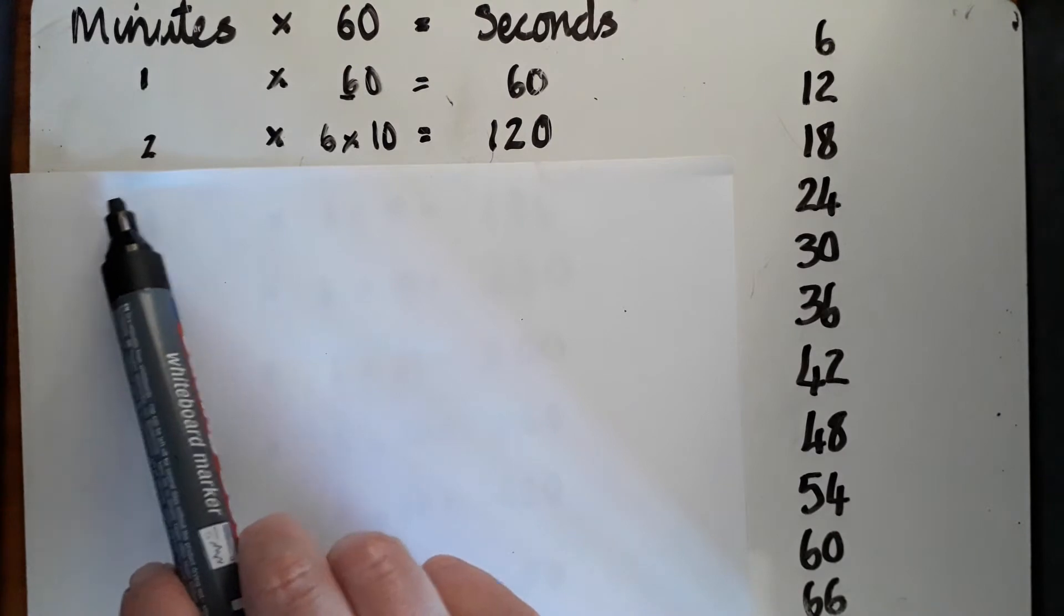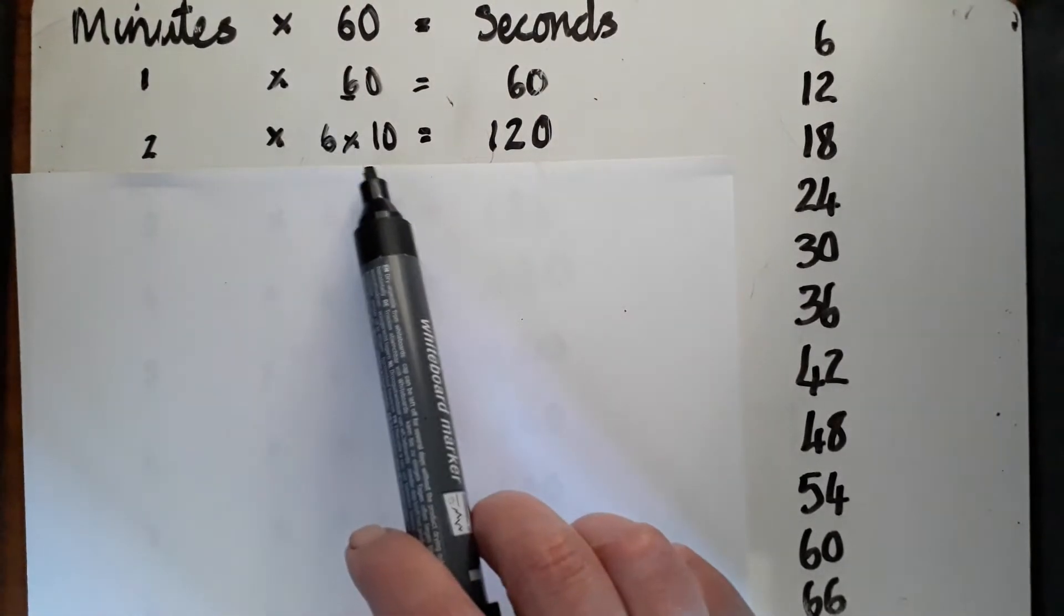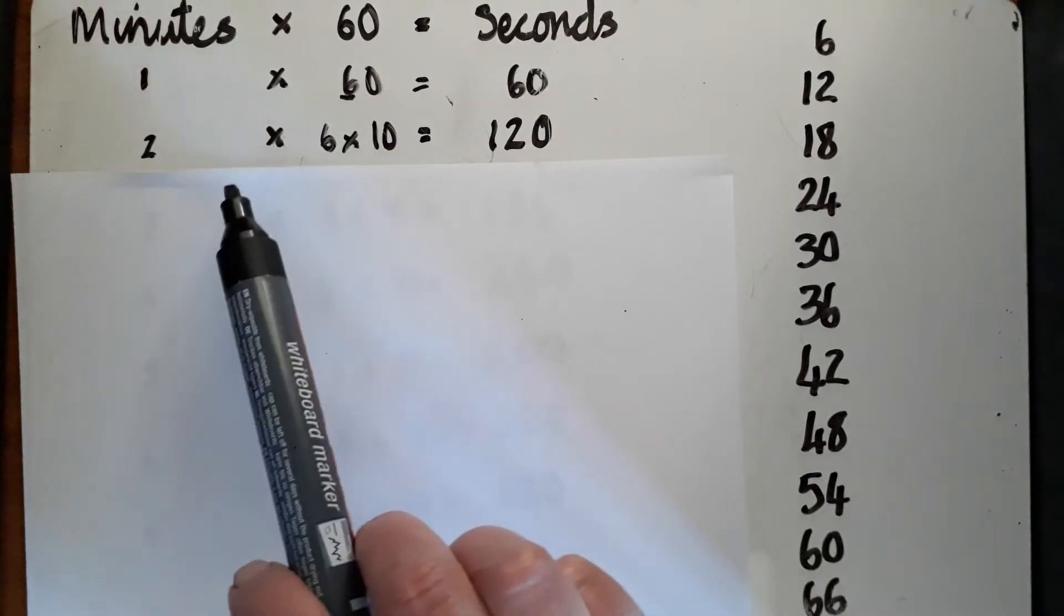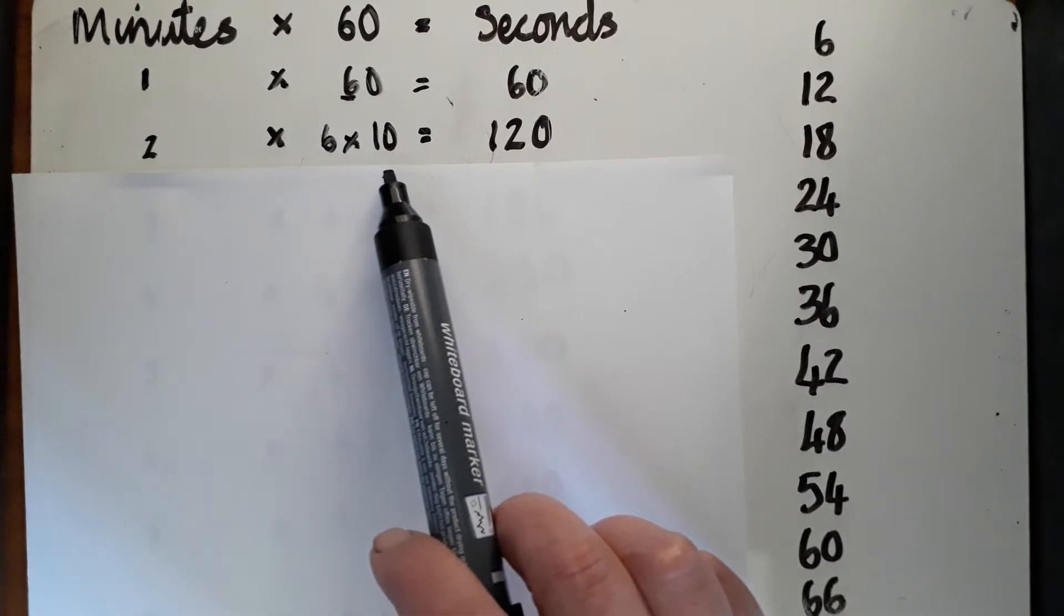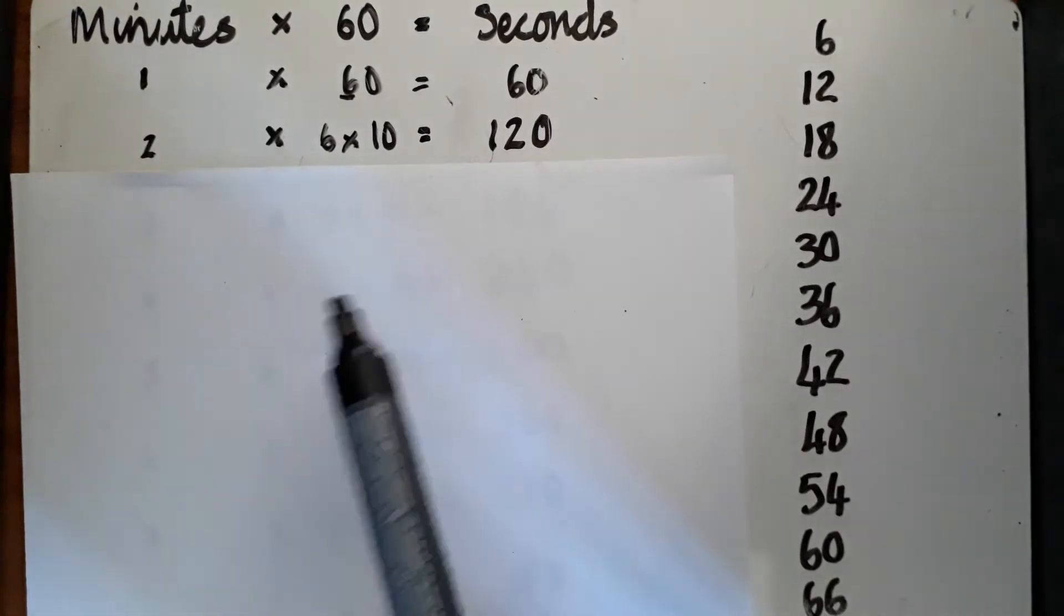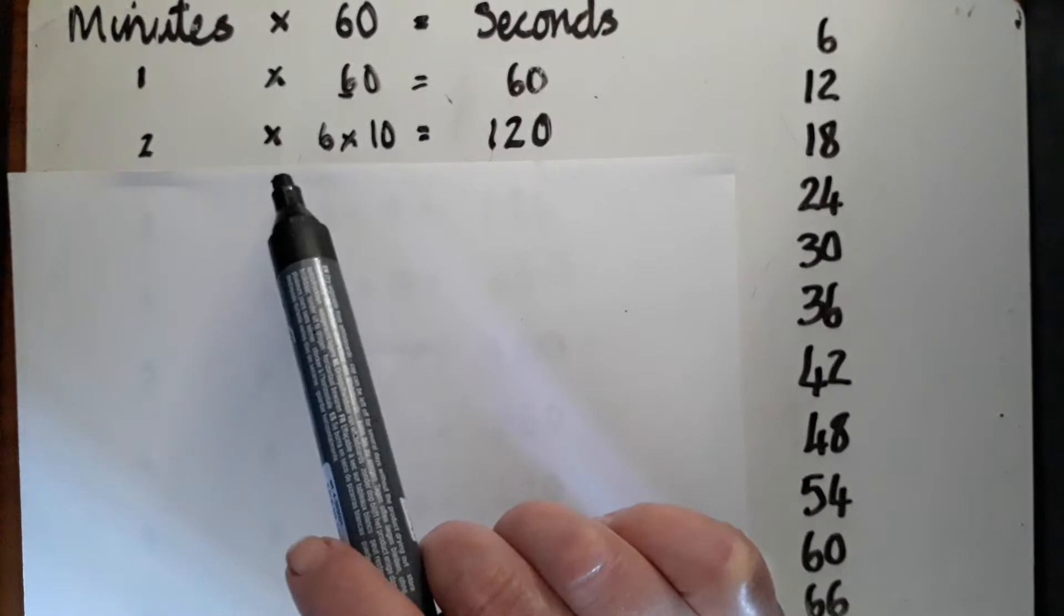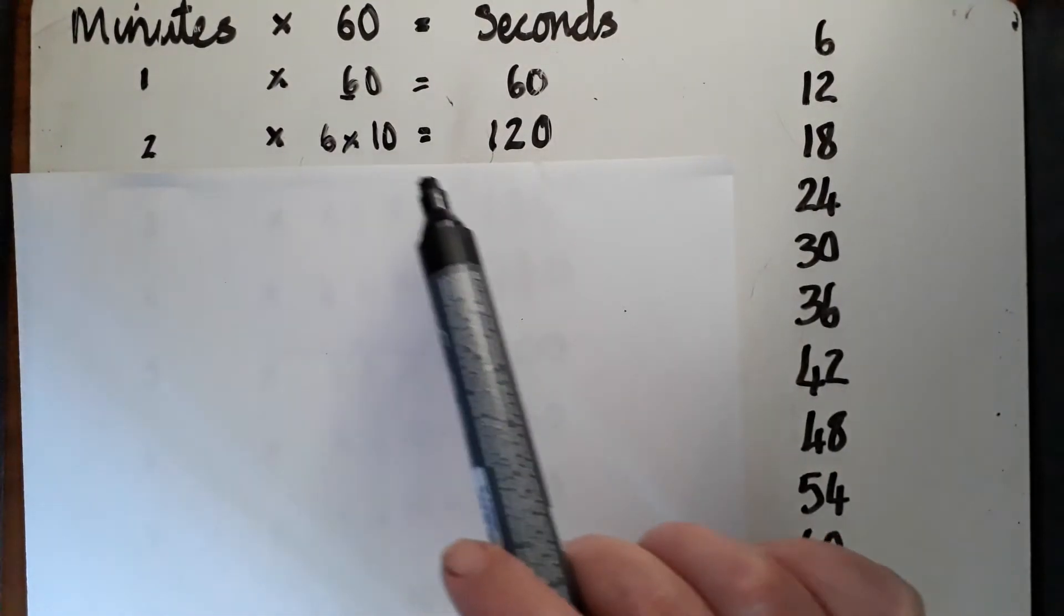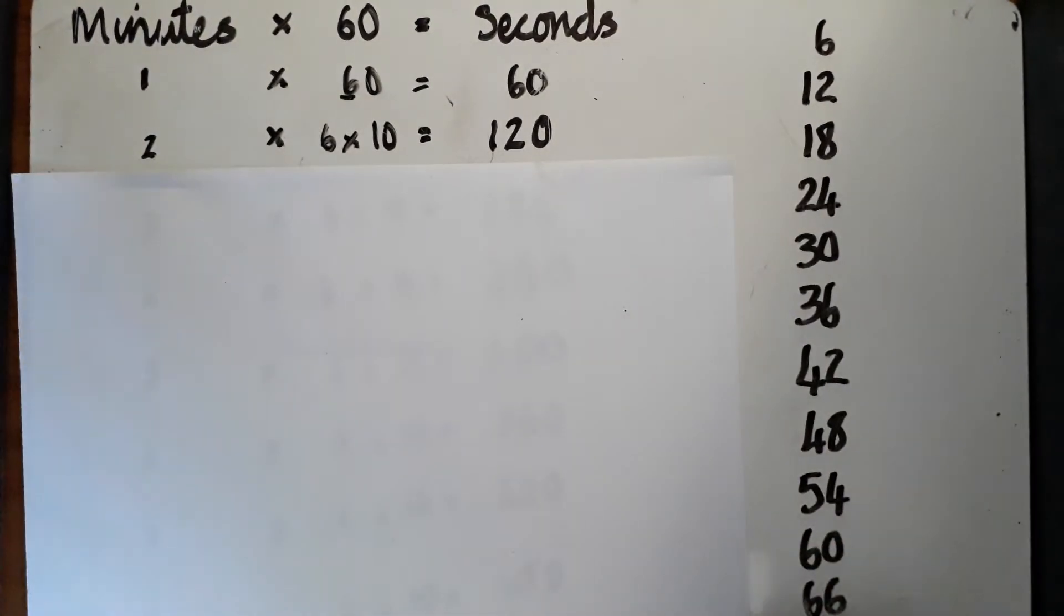I'm going to do 2, and what I'm doing is timesing it by 60 still, but I'm going to make it easier for me to do by doing 2 times 6 and then timesing by 10, because 6 times 10 is 60, and that's the distributive law of multiplication. So 2 times 6 times 10, well 2 times 6 is 12, times 10 moves up one place value, 120.